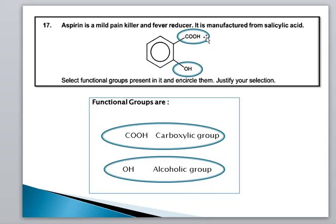If we have to encircle the functional groups, there are two functional groups. One is COOH and one is OH. We know that COOH is carboxylic acid and OH group is an alcoholic group. So aspirin, with its benzene ring, has two functional groups: carboxylic acid and alcoholic group.